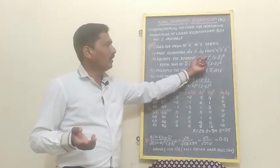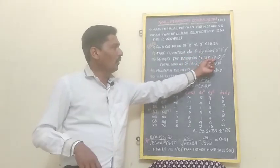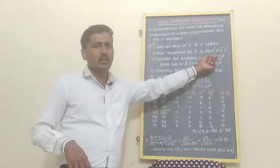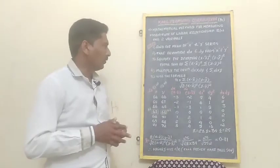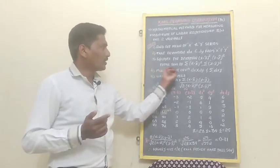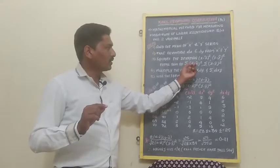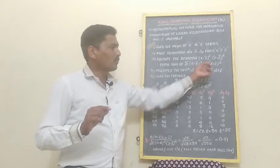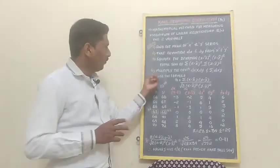Third step: square the deviations. That is, dx squared equals (x minus x-bar) whole square, and dy squared equals (y minus y-bar) whole square. Then find the summation of (x minus x-bar) whole square and summation of (y minus y-bar) whole square.